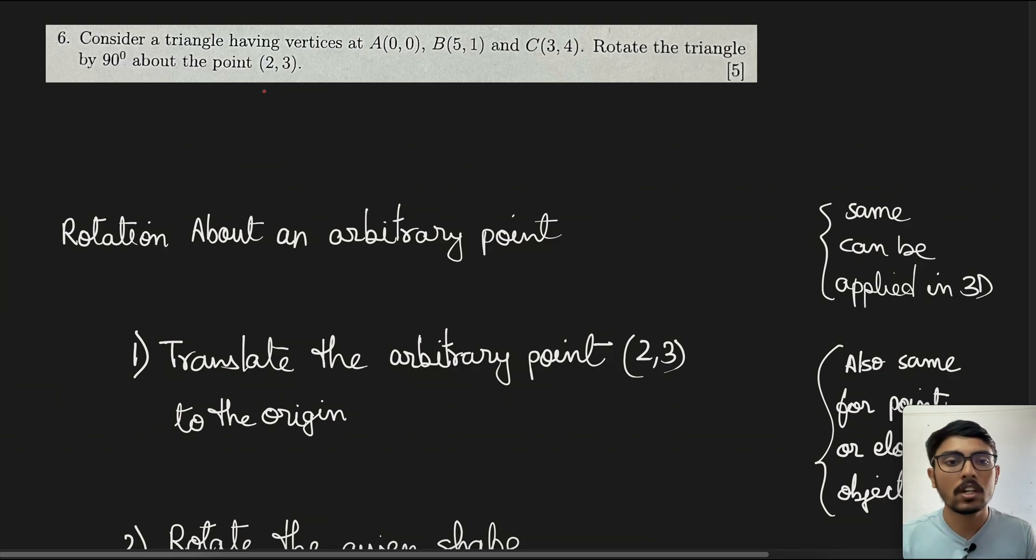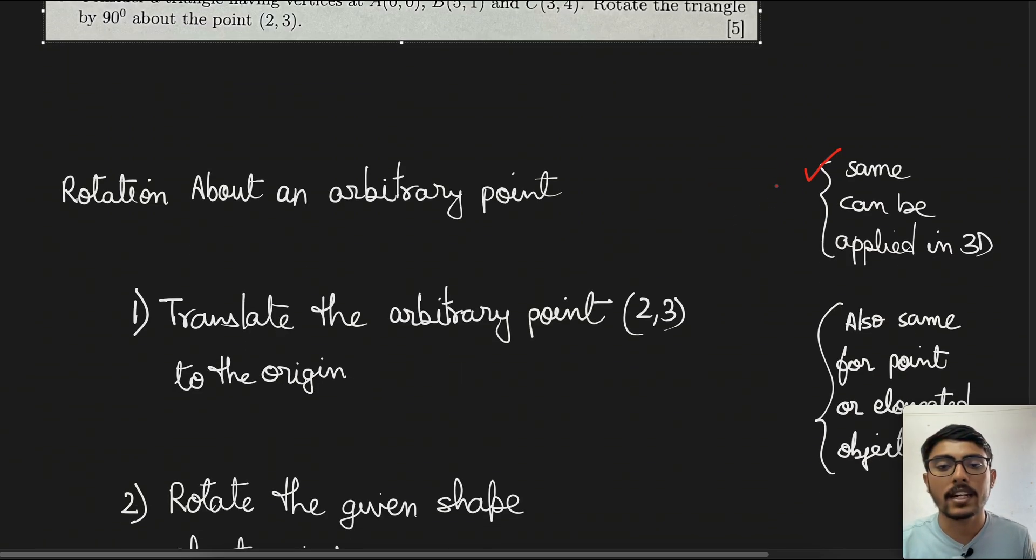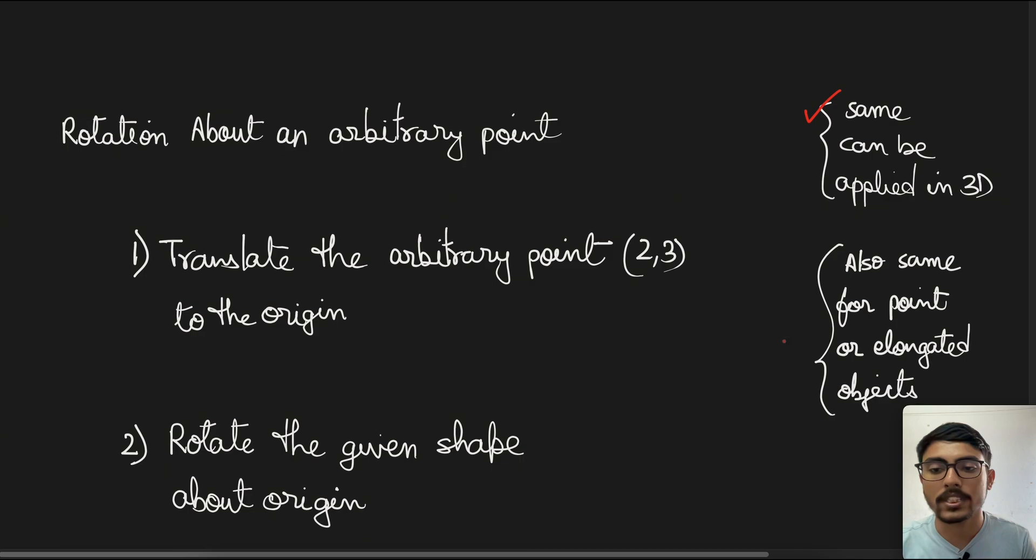Before I start, I also want to let you know that this same method can be applied when the object is in 3D. We would be considering the z-axis in that case, so the same process can be applied there also. Here you are seeing that the object has 3 points, but this same method can be applied when the object is point-sized.